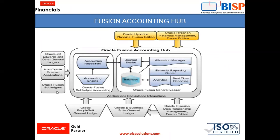The diagram shows data from external sources, integrated from Oracle PeopleSoft Journal Ledger, Oracle E-Business Suite Journal Ledger, Oracle Hyperion Data Relationship Management Fusion Edition, Oracle Fusion Sub-Ledger Accounting, and Oracle Fusion Journal Ledger, which also contains the Financial Reporting Center. These are all the components of the Oracle Fusion Accounting Hub.